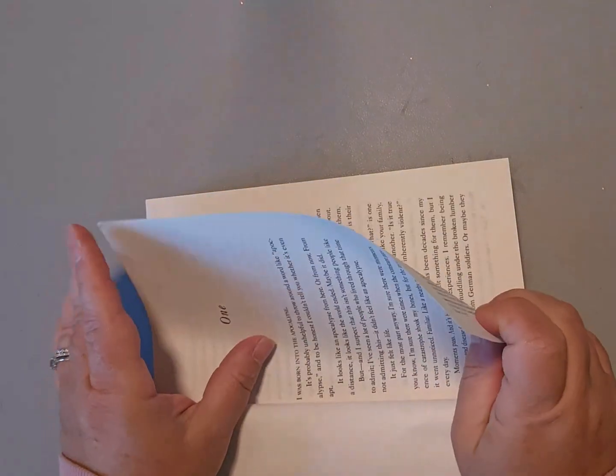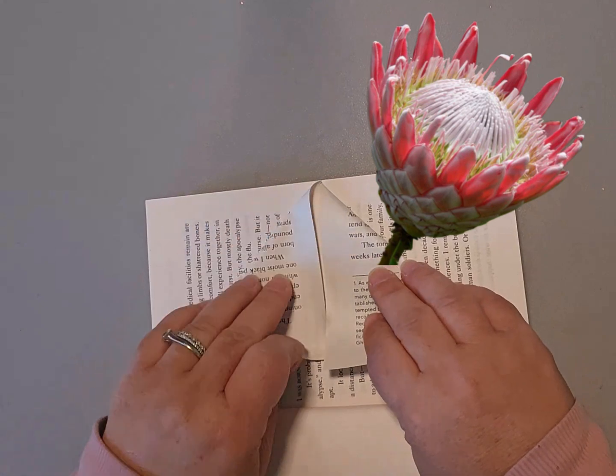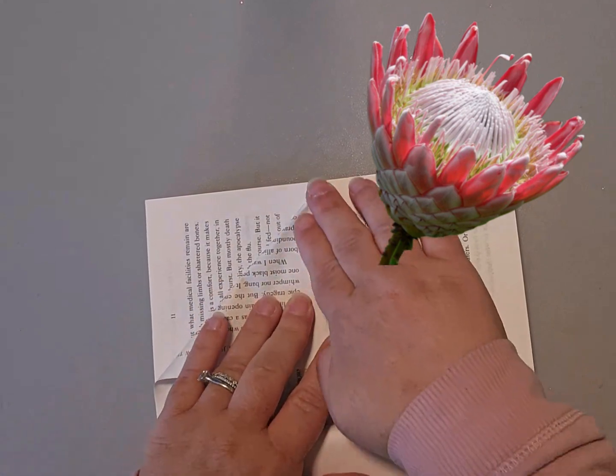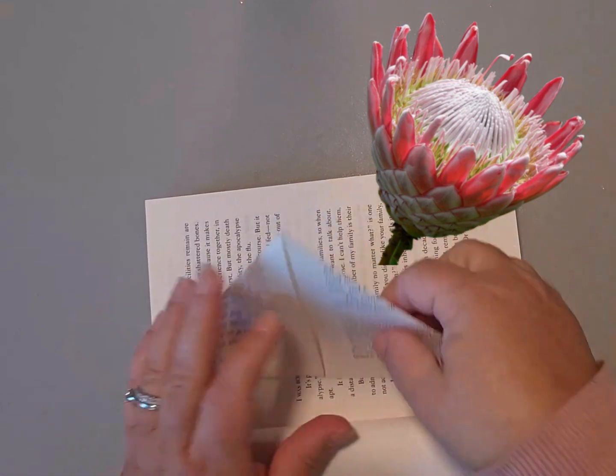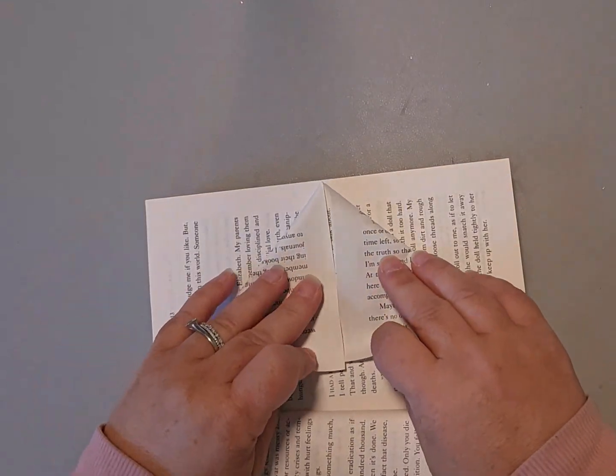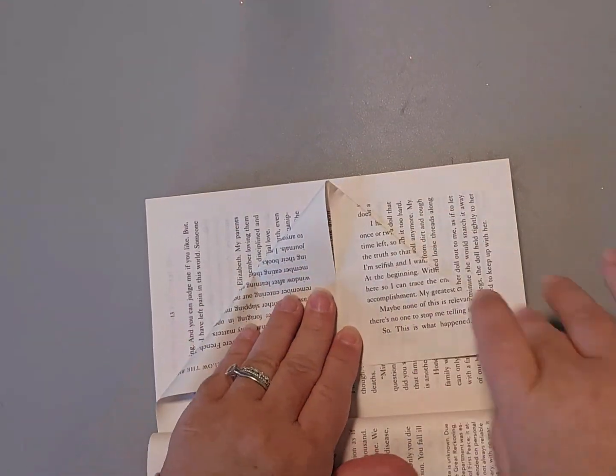A protea is the national flower of South Africa. It's also known as a sugar bush, so I was just kind of curious and went ahead and looked that up.